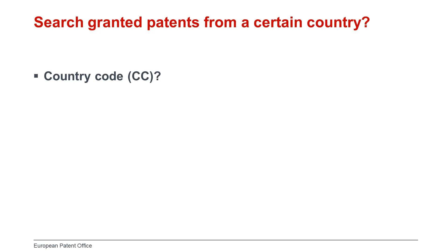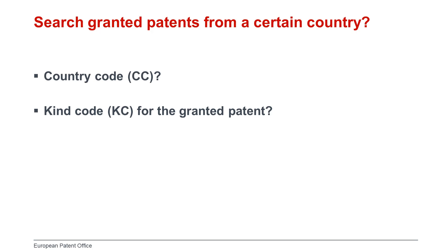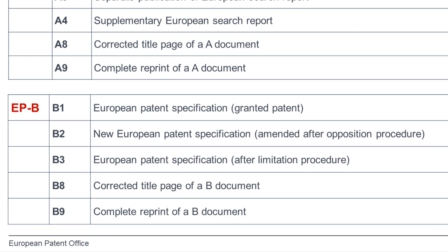If you want to search granted patents from a certain country in Espacenet, you first need to know the two-character country code or regional code, and what is the kind code associated with granted patents for that country or patent authority. For European granted patents, the kind code B1 is used, B2 for European patent specifications amended after an opposition procedure, B3 for European patent specifications after a limitation procedure, etc.